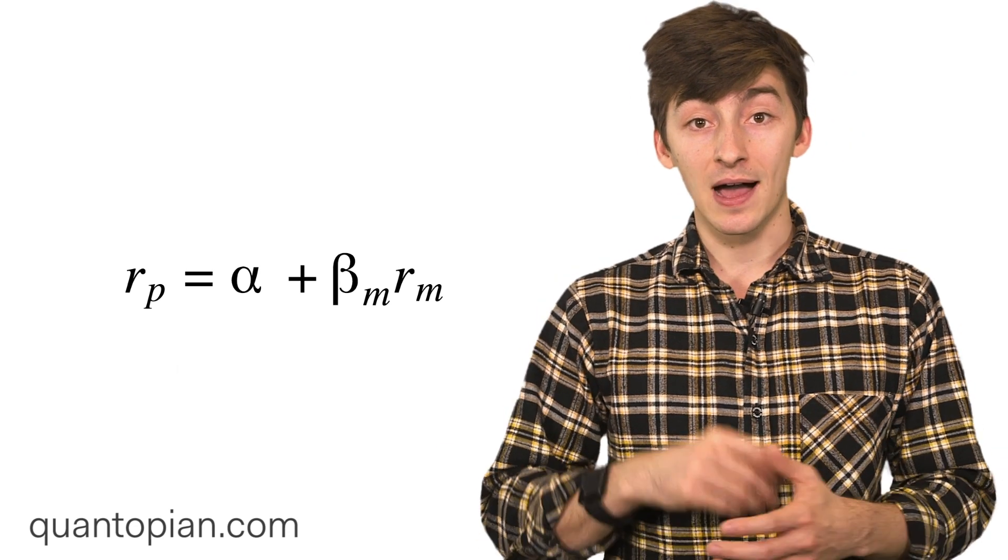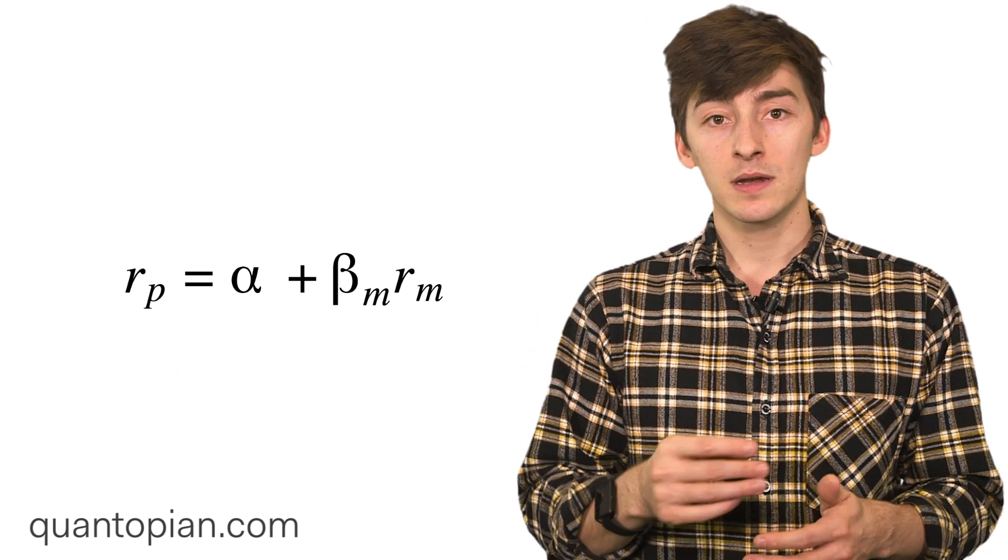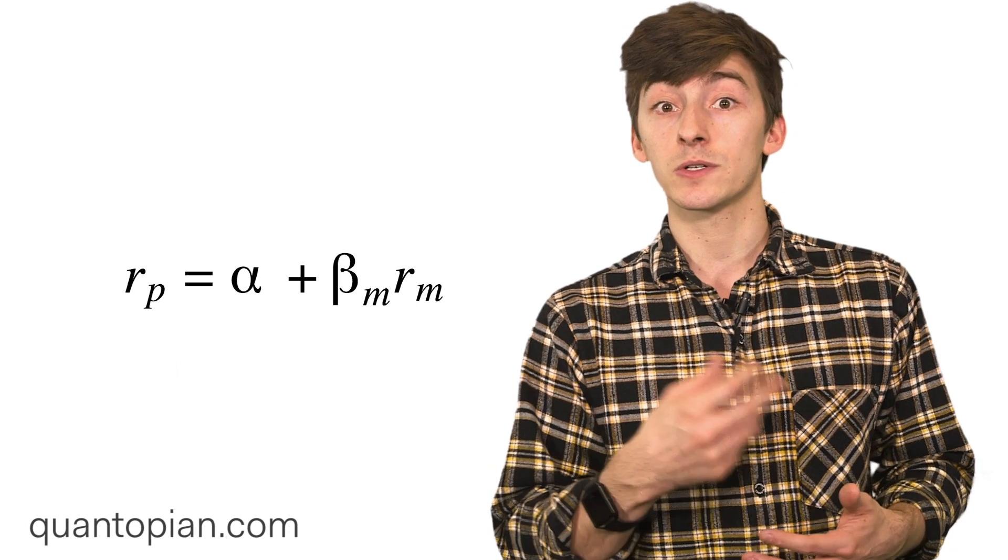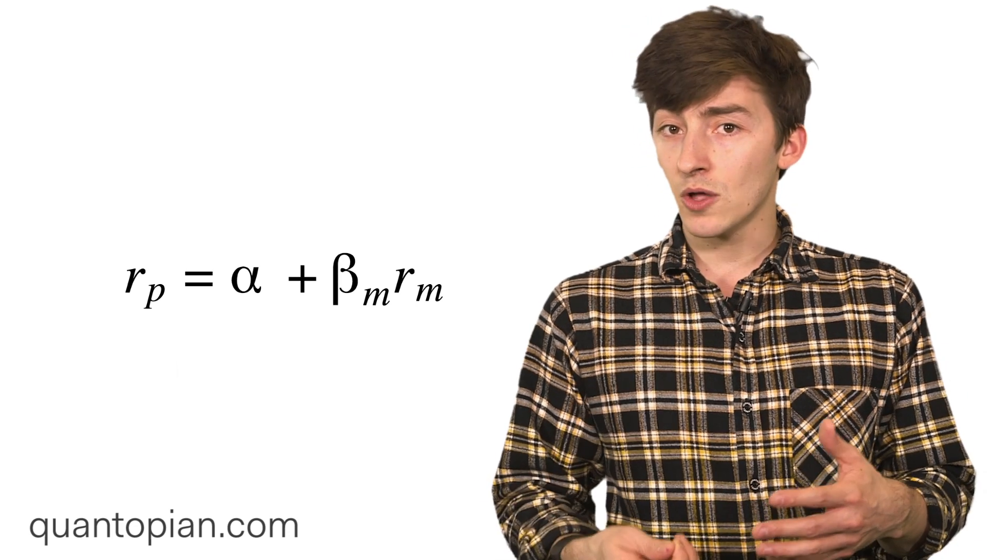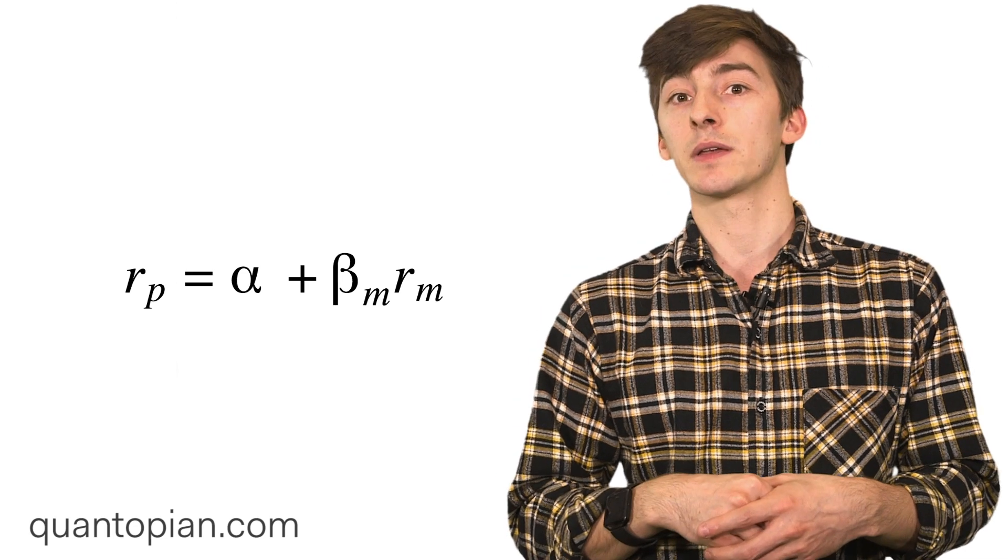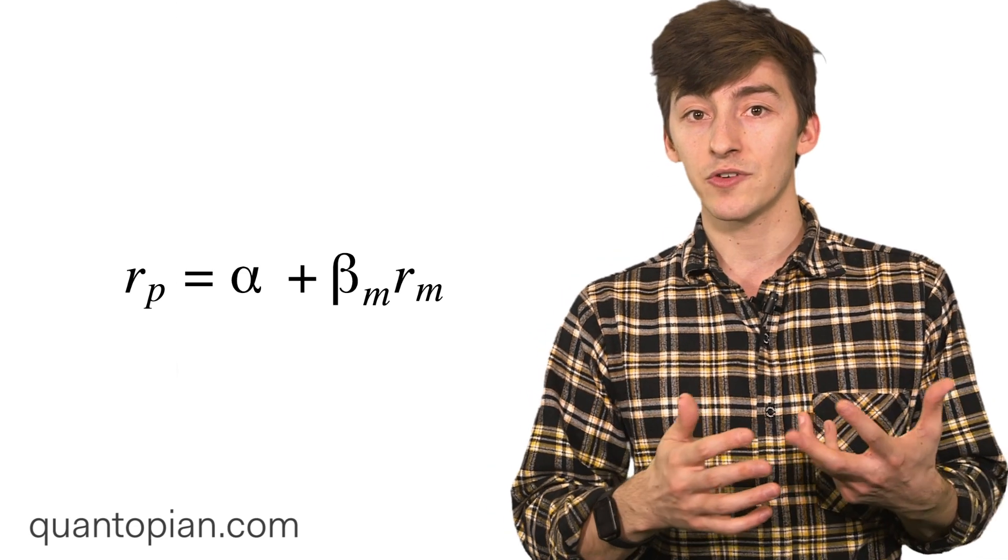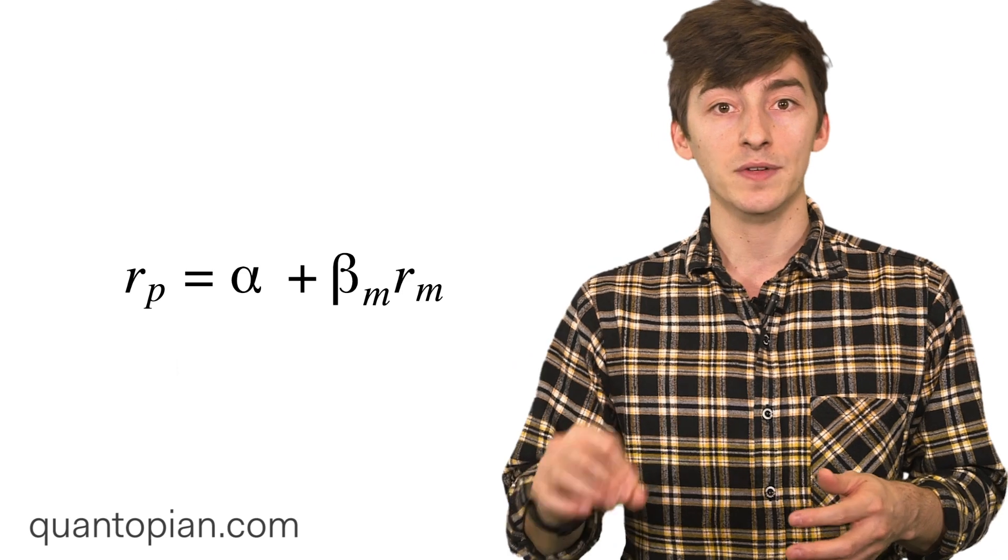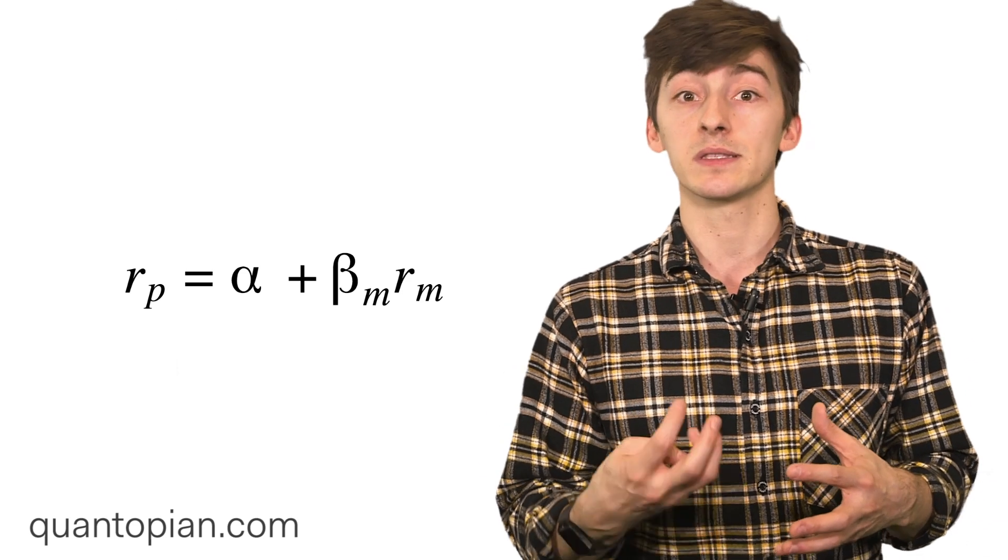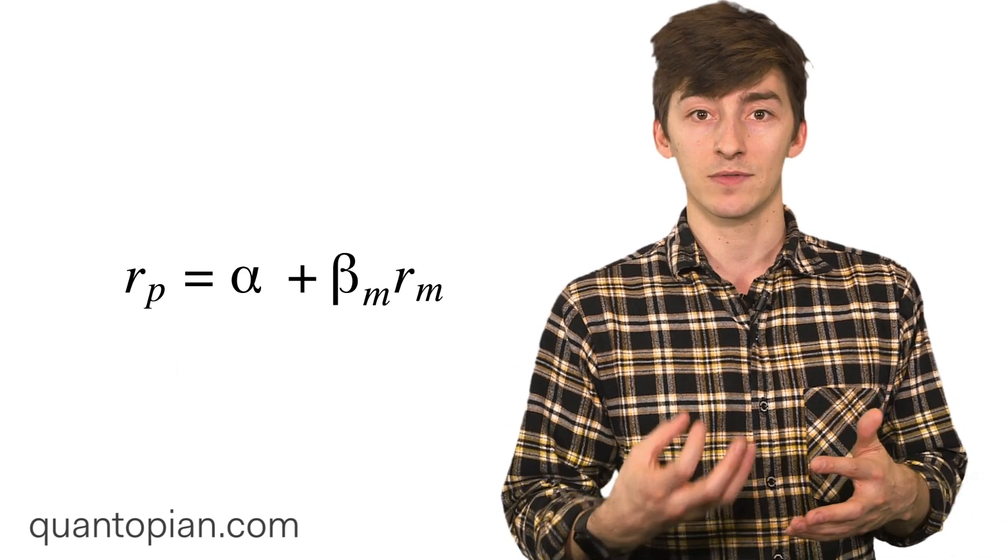When you have a high beta coefficient, a high exposure to the market, then any small movement in the market is going to heavily influence the returns of your strategy. Whereas if you have a low beta coefficient, a low exposure to market, then the returns of your strategy are driven almost entirely by that alpha term, by the novel return that is left over after removing the influence of the market.